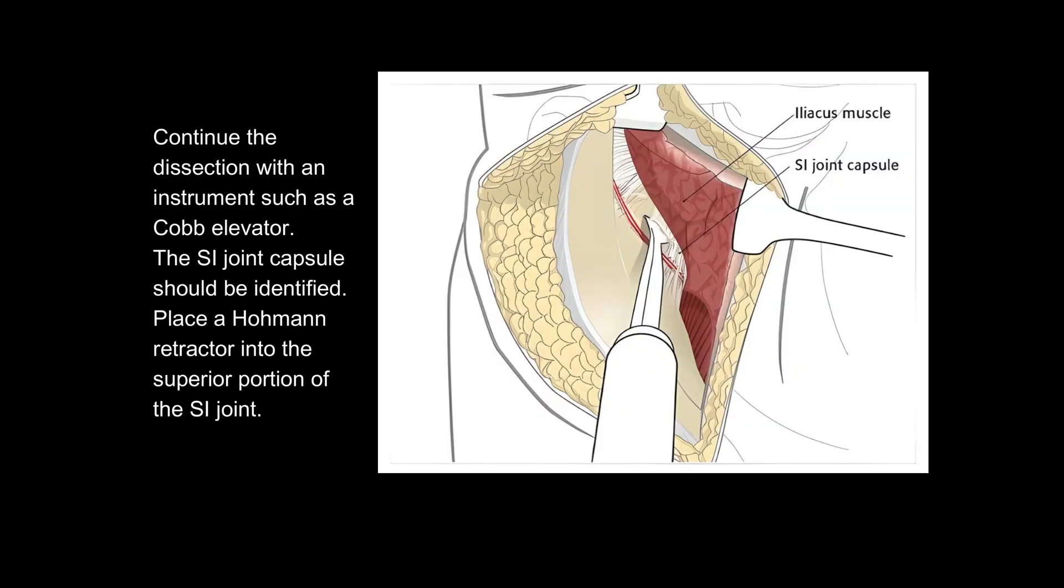Continue the dissection with an instrument such as a cob elevator. The SI joint capsule should be identified. Place a Hohmann retractor into the superior portion of the SI joint.